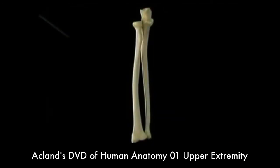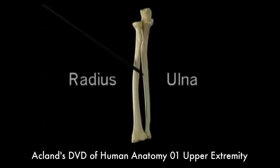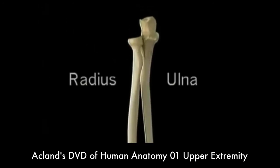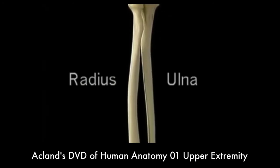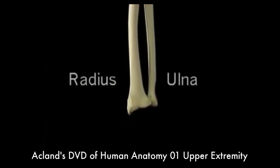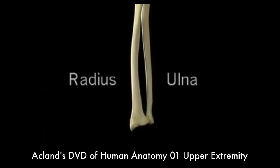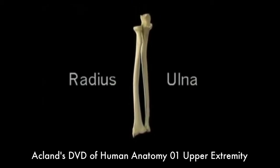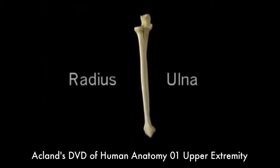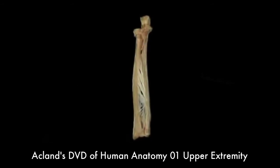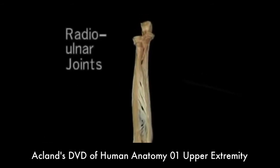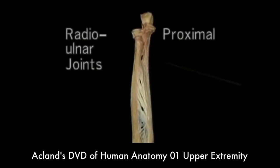Now let's look at the two forearm bones, the radius and the ulna. They're different in that the ulna is bigger proximally, while the radius is bigger distally. They're also different in that the radius rotates but the ulna doesn't. The two bones are held together by two radio-ulnar joints, the proximal and the distal.